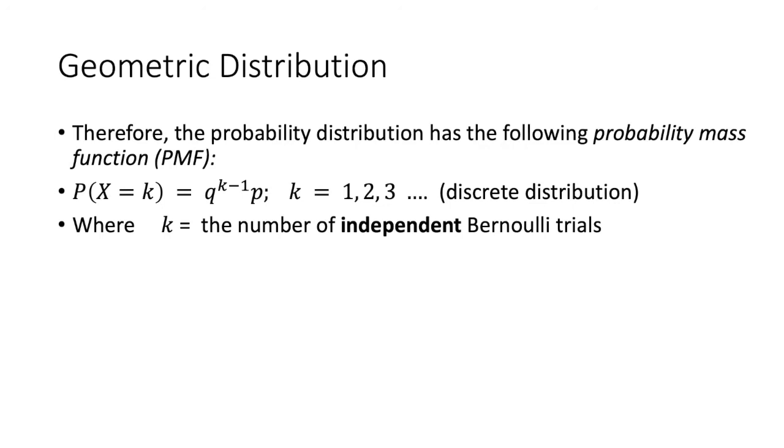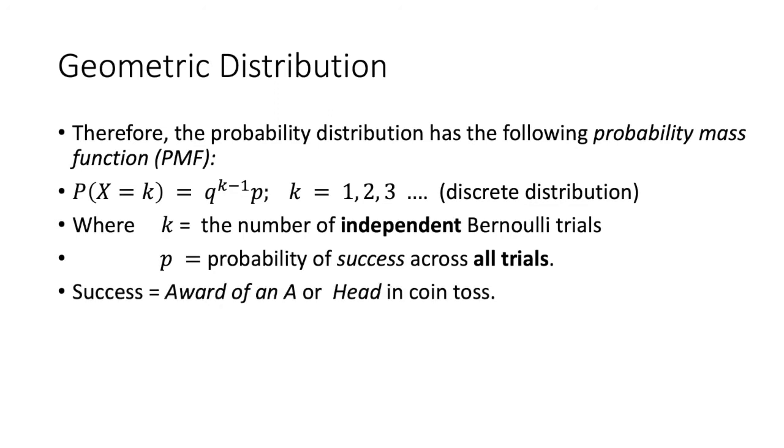So the first assumption is that K is the number of Bernoulli trials, and these Bernoulli trials must be independent of each other. In other words, one trial should not affect any other trial. And secondly, P is a uniform probability of success. It doesn't change across trials. Note, success marks the outcome that terminates your sequence of trials. So in this case, it is the award of an A. At other times, you may be tossing a coin and waiting for a head to appear. So arrival of head marks the success in that case.